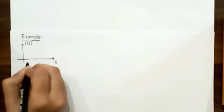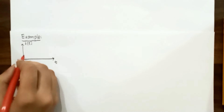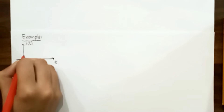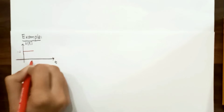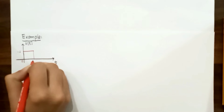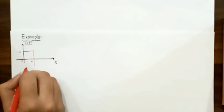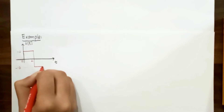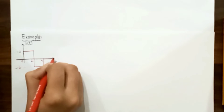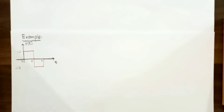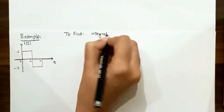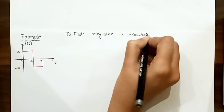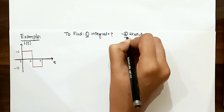Let us solve an example of singularity functions. We have a function in the xy plane where t is on the x-axis and current is on the y-axis. For t less than 0 its value is 0, at t equal to 0 it attains the value of 10, and from t equal to 0 to t equal to 2 it is equal to 10. We have to find the integral of this function and sketch it. This figure shows a unit step function.